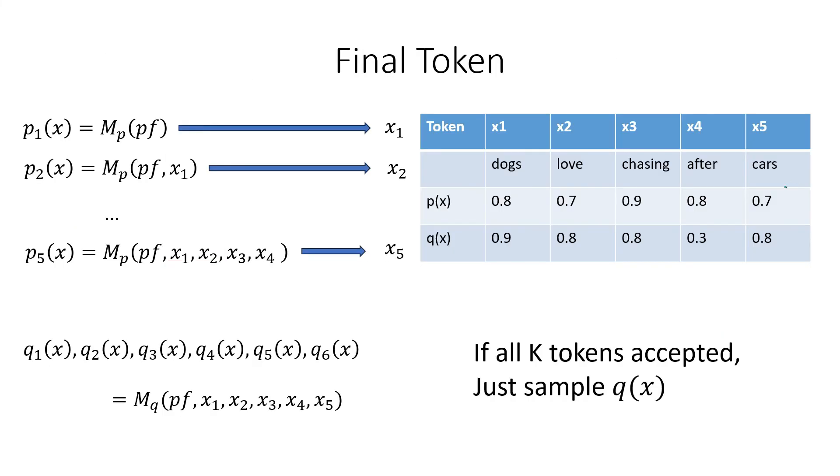One last thing to note is that if we get really lucky and we accept all of these tokens that were proposed by the draft model, then we simply sample from q(x) because there is none of the rejection logic that we have to deal with in the probabilities.